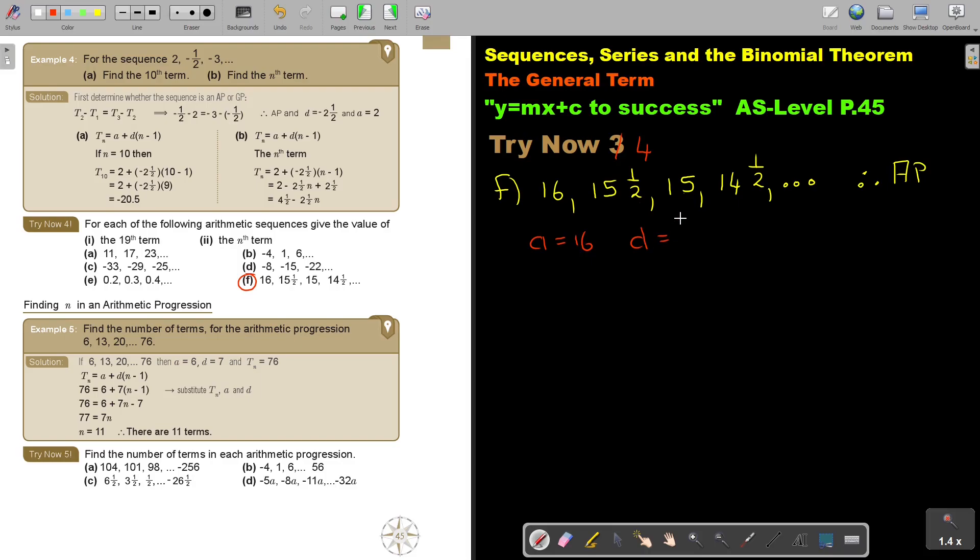The value of A is 16, and the value of D, I find it. This is term 1, this is term 2, this is term 3. So, by saying term 2 minus term 1, which is 15½ minus 16, and that's just negative ½. And now, I'm asking you to find the 19th term.